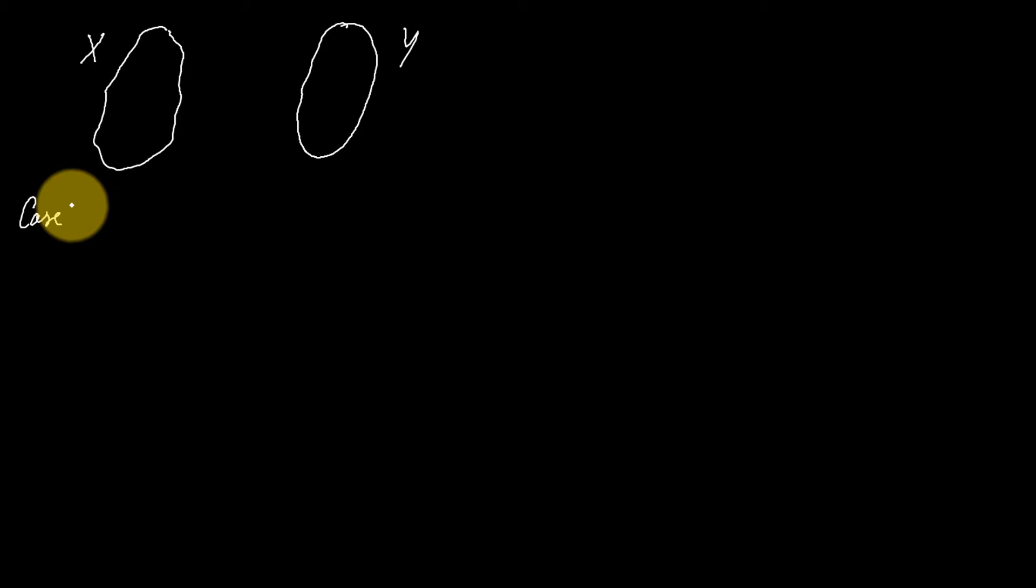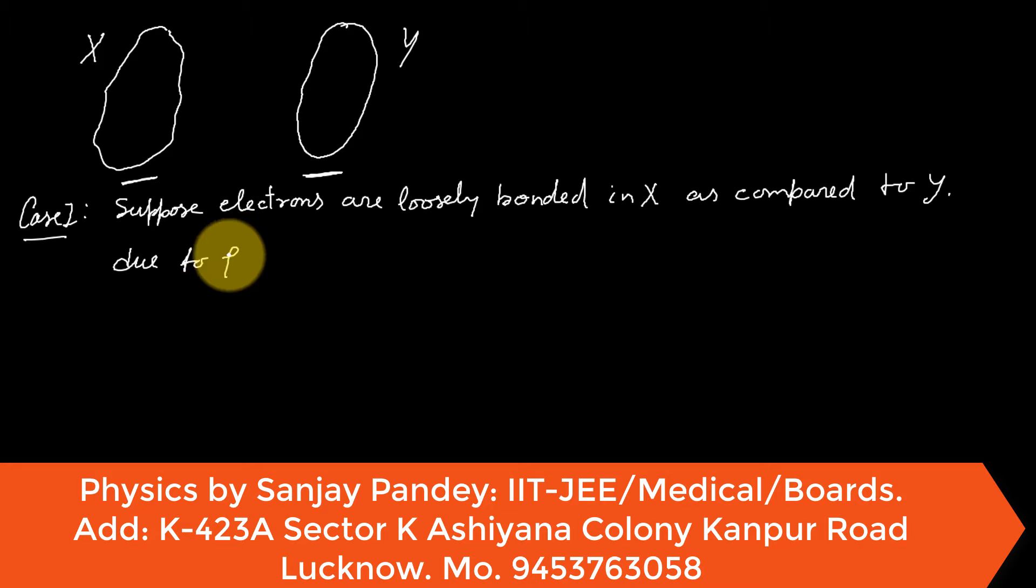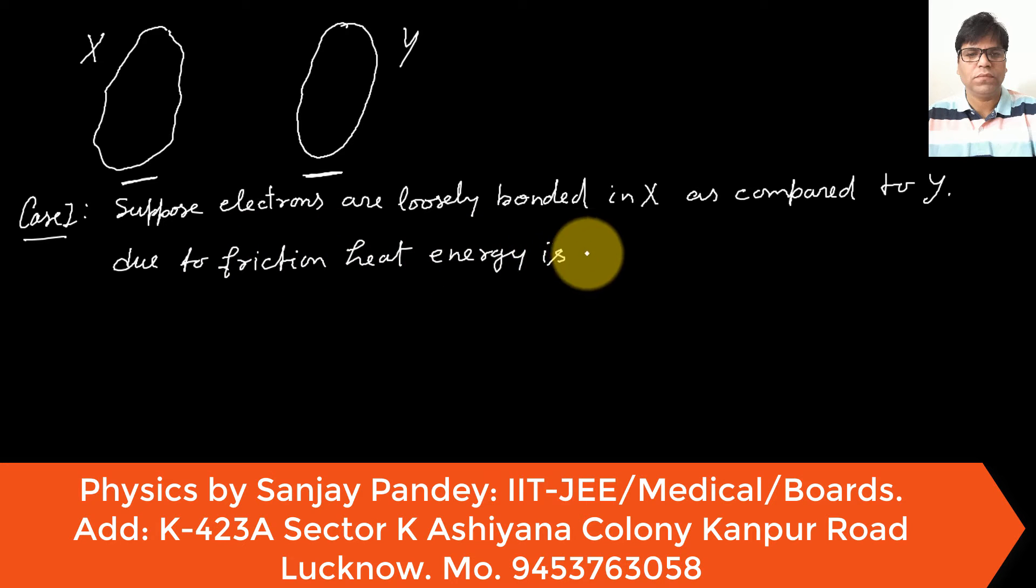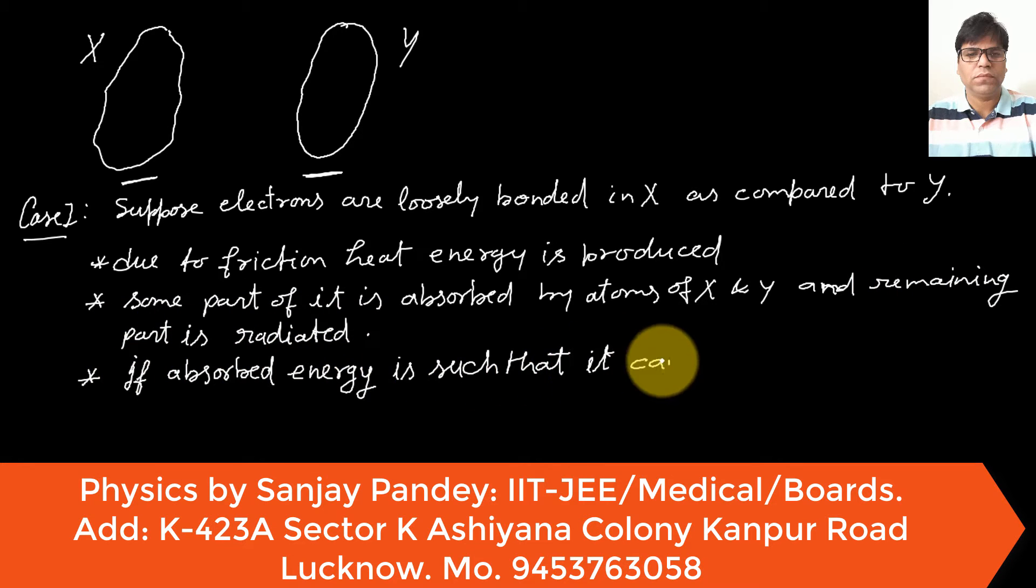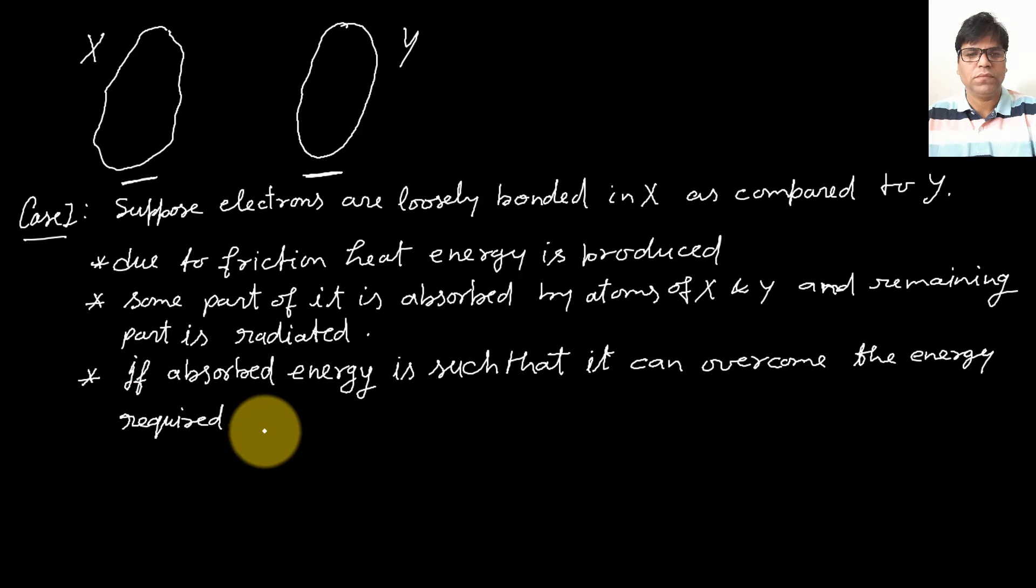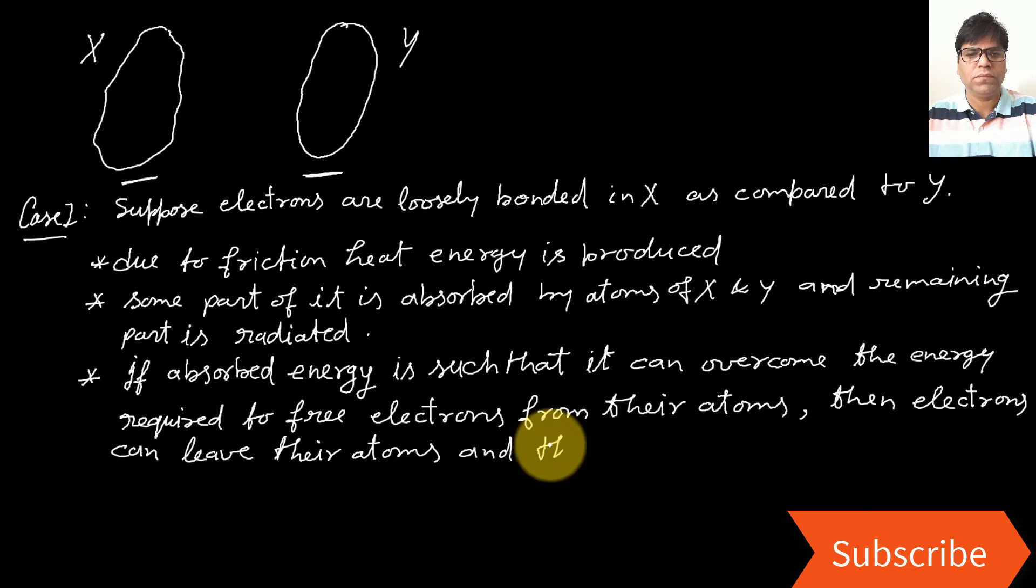To explain this, suppose X and Y are two objects of different materials. Also suppose electrons are loosely bounded in object X as compared to object Y. Now if we rub X with Y, then due to friction, heat energy is produced. Some part of it is absorbed by atoms of material under friction and remaining part is radiated.